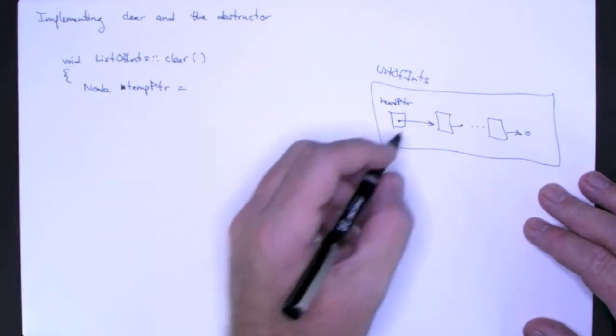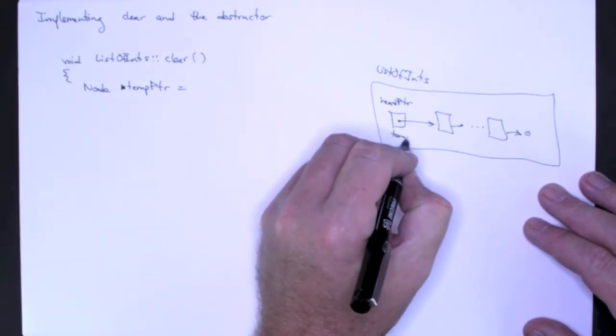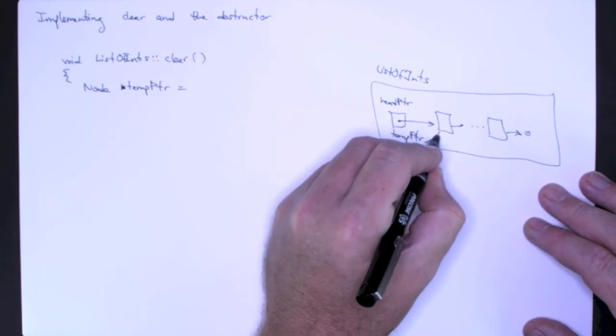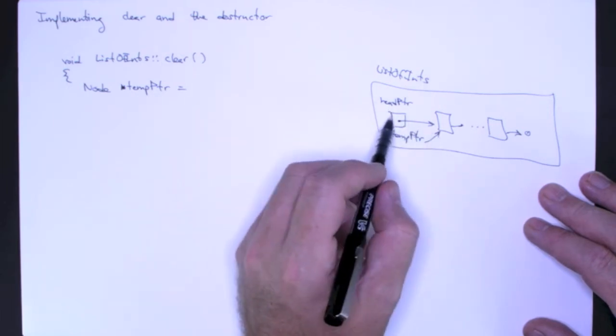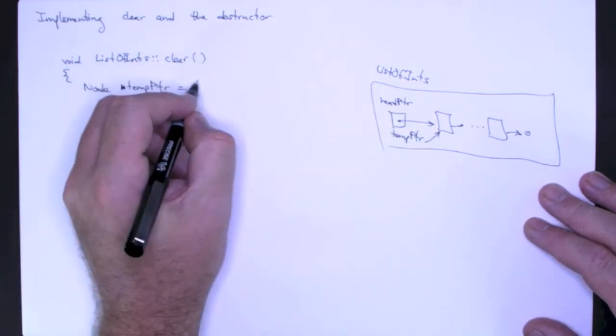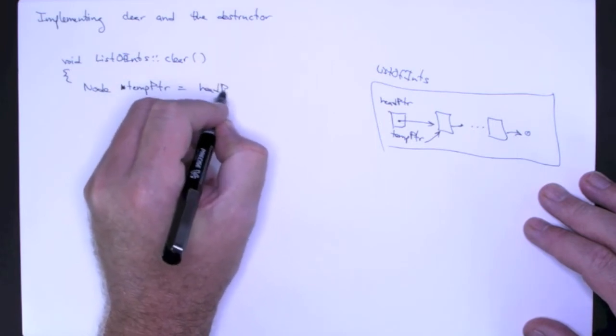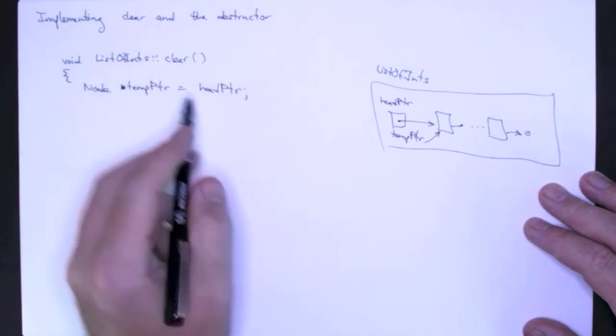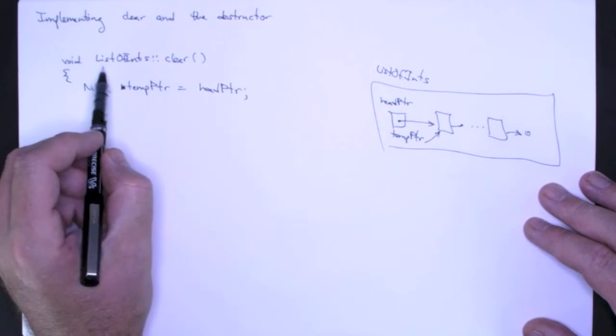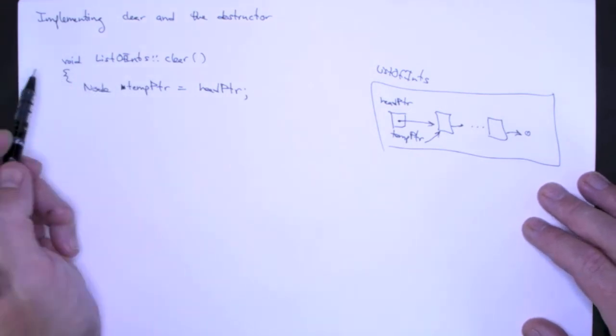So the first thing I'm going to do is make temp pointer point to the first element of the list. I'm going to store head pointer's address in temp pointer. Keep in mind the head pointer here is referring to the private data member in the list of integers.